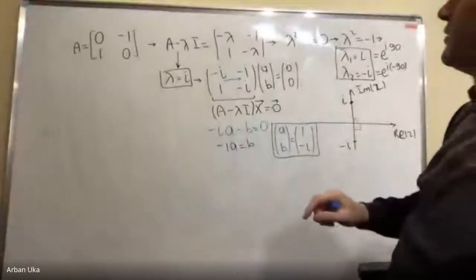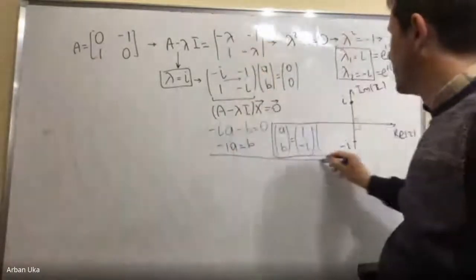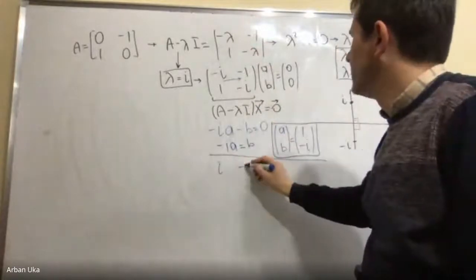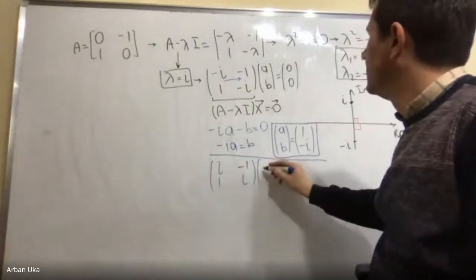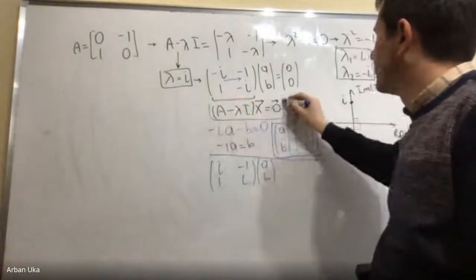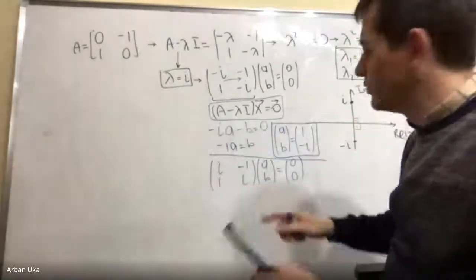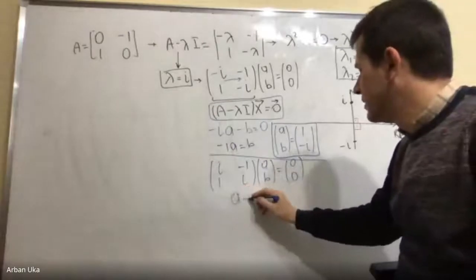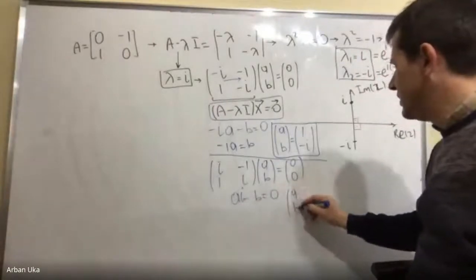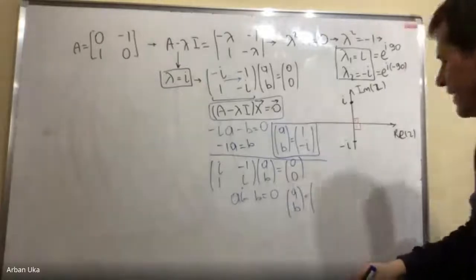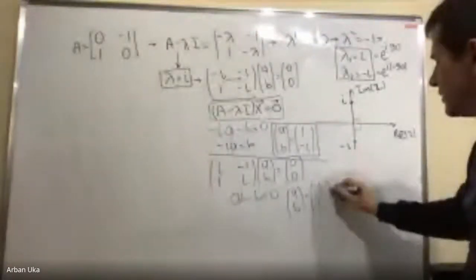For the second eigenvector we substitute lambda equal to minus i. The matrix becomes [i, -1; 1, i]. Again the rank equals one, giving us the single equation: i·a minus b equals zero. Setting a equal to one, b equals i. So the second eigenvector is [1, i].